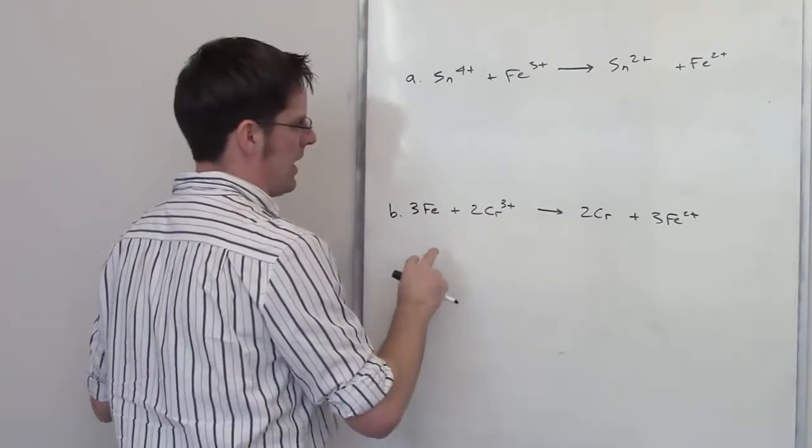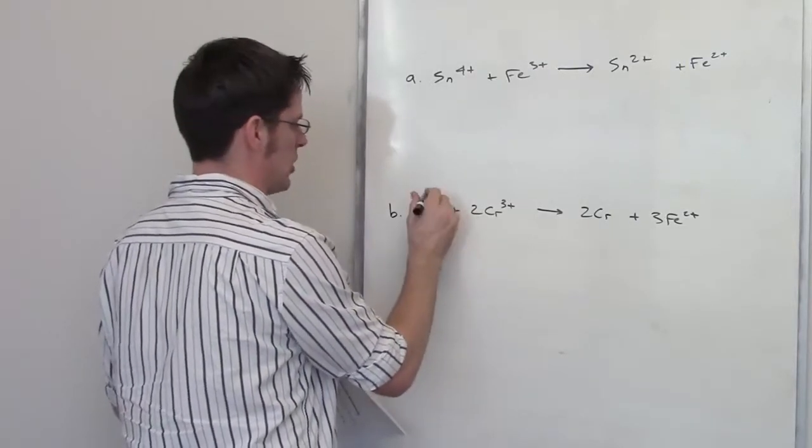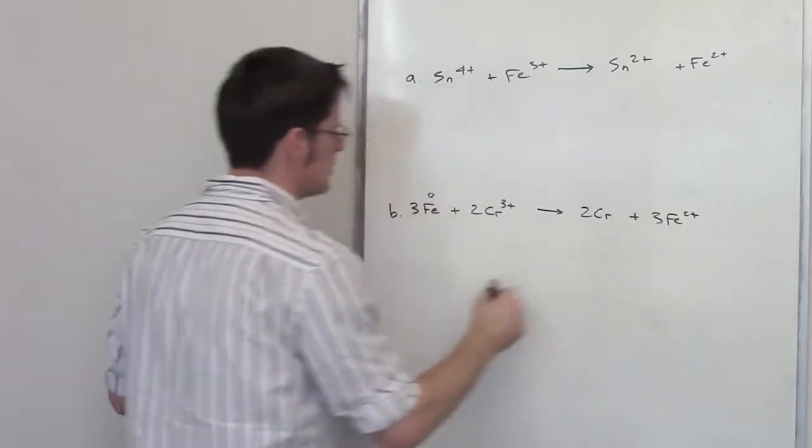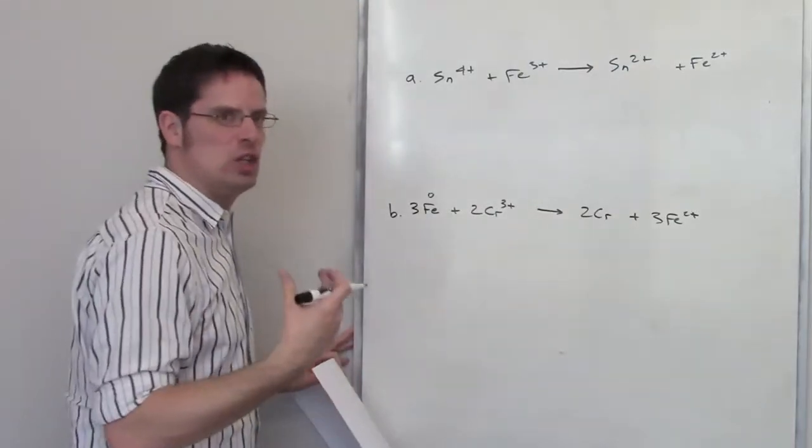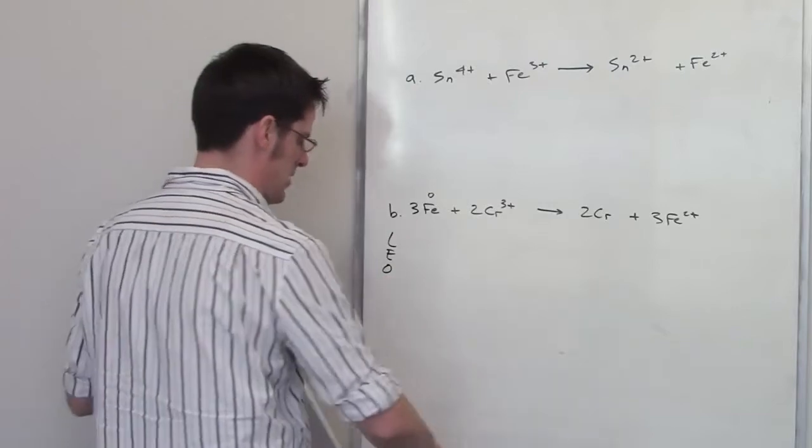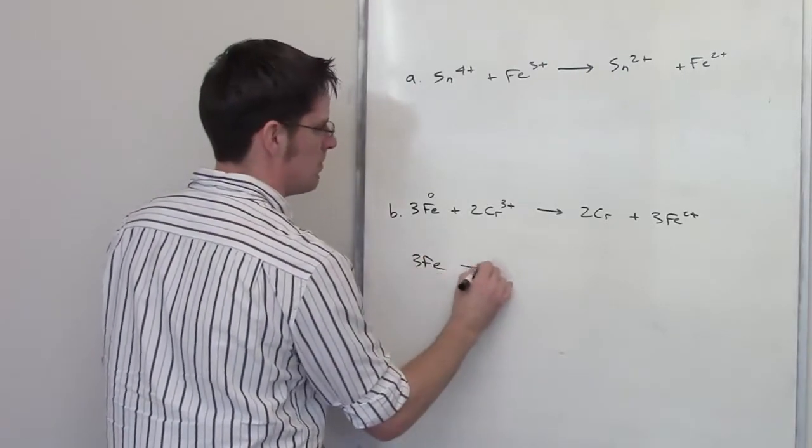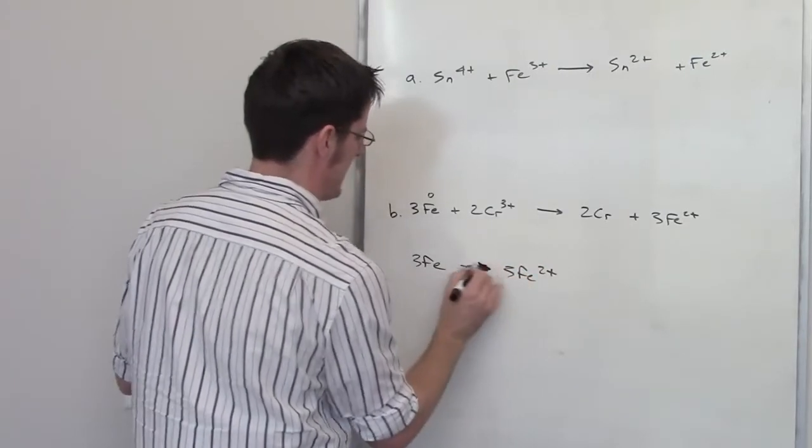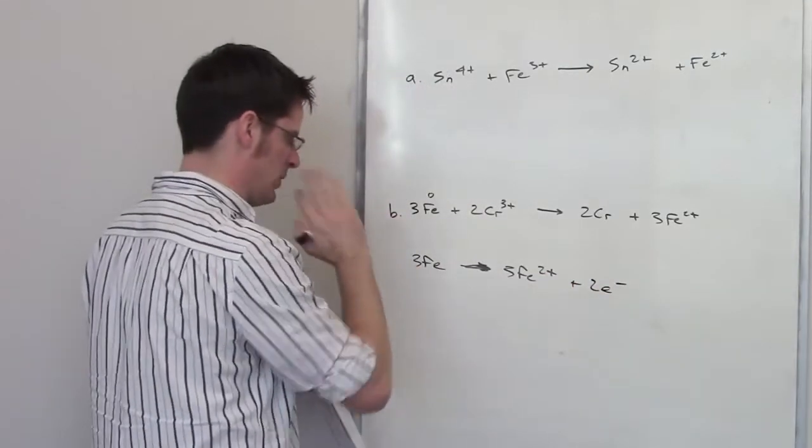Let's begin by figuring out what is oxidized and what's reduced. Iron here is iron all by itself, no charge, has an oxidation number of zero. Over here has an oxidation number of plus two, which means that iron is becoming more positive, which means that it's losing electrons. Losing electrons means oxidation. So my oxidation step is three irons being converted into three iron two pluses. In order to have that balance out, the iron is going to have to lose two electrons.